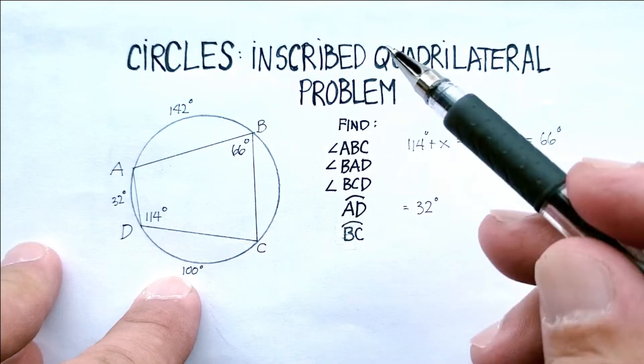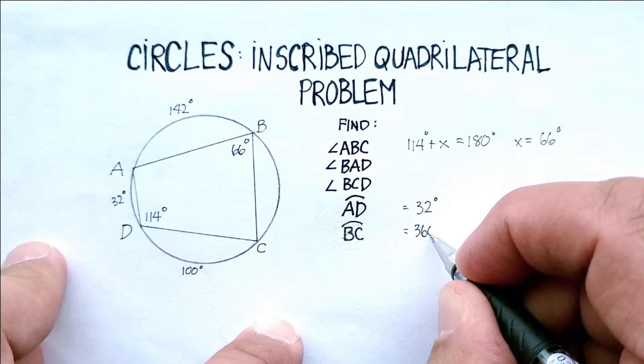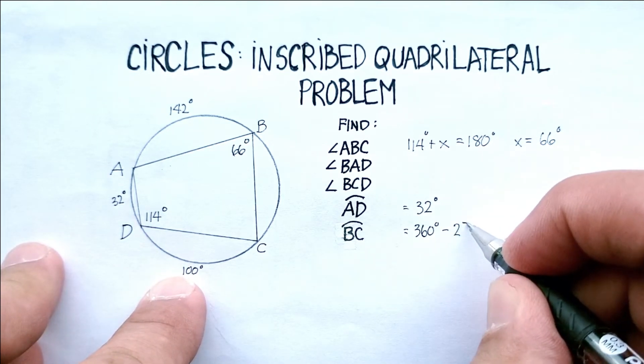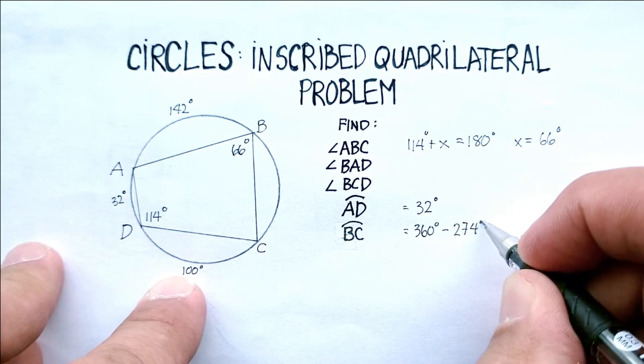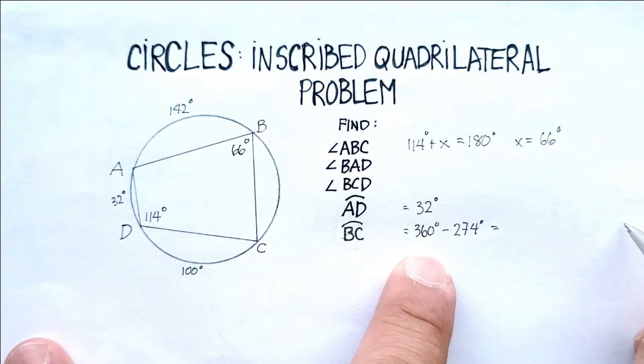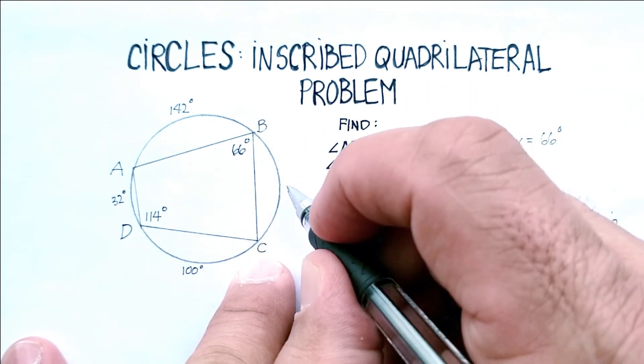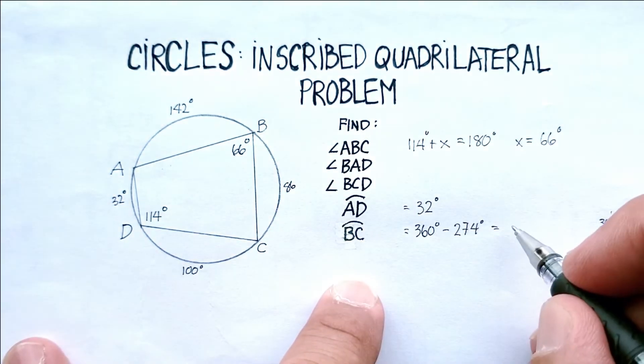That would be 174, 274. So we would say 360 minus 274 should give us our arc BC, right? And 360 minus 274, let me just do a quick subtraction. There's 6, there's 5, is 86. So we know that this arc right here is 86 degrees.